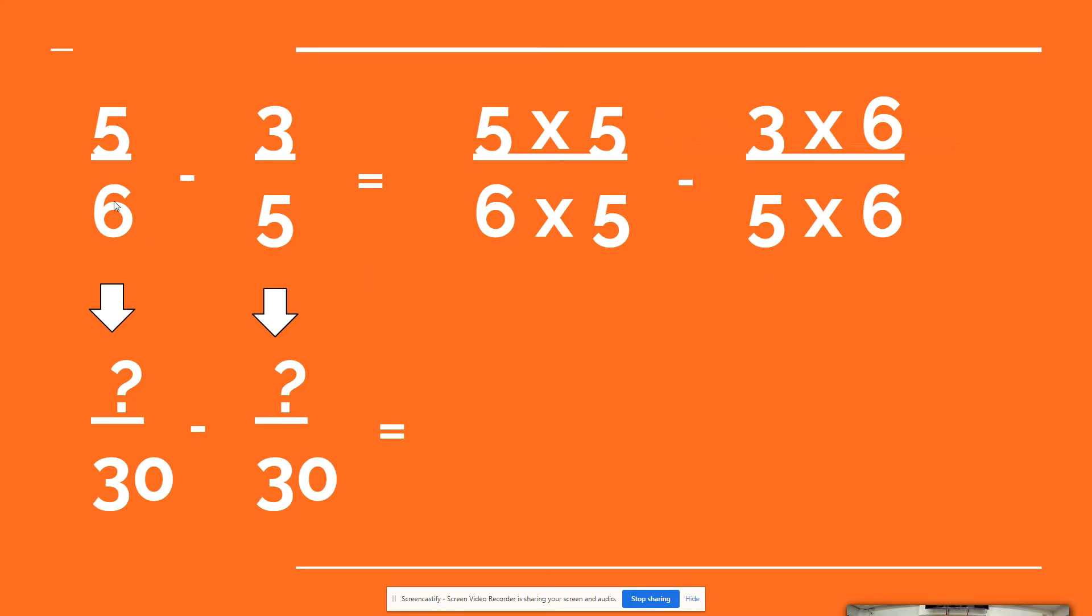Let's take a look. From 5/6, it will become 25 over 30, 5 times 5. From 3/5 over 30, it will become 3 times 6. Our new numerators are 25 over 30 minus 18 over 30. We can now subtract the numbers.